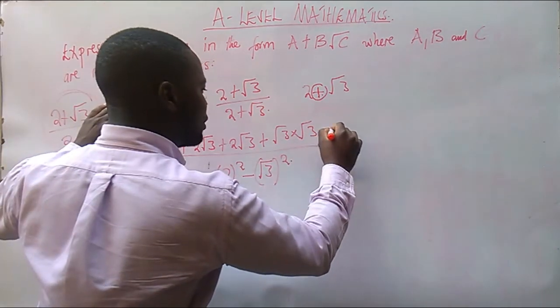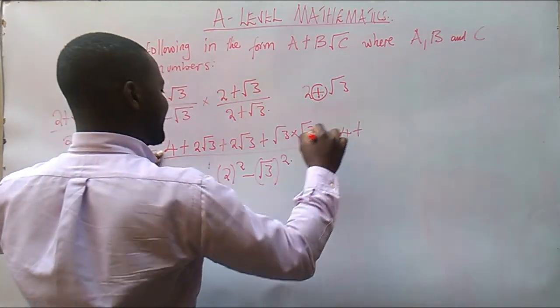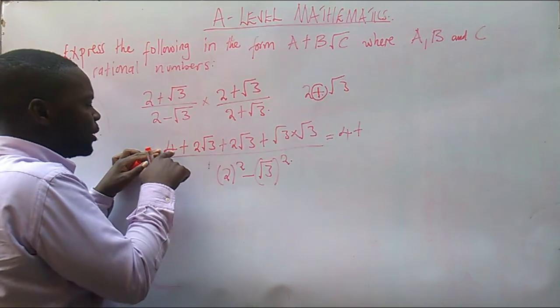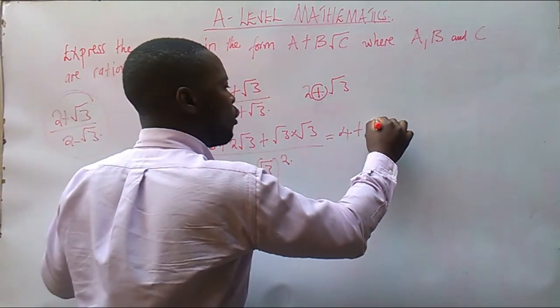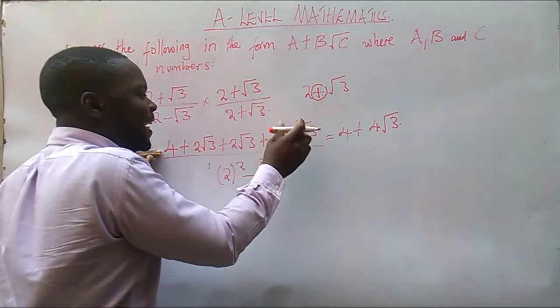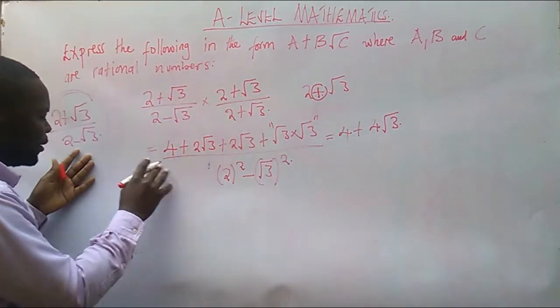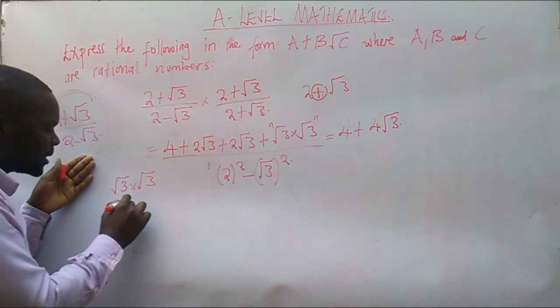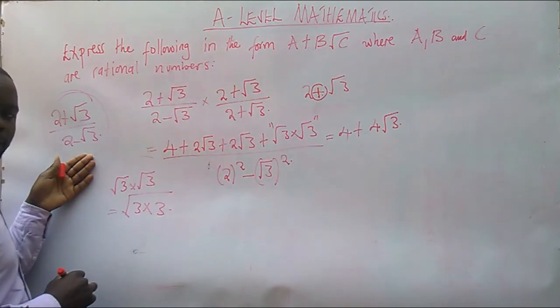So meaning that we are going to have, we have got 4 plus 2 root 3 plus 2 root 3 is the same as 4 root 3. And then here, if they say root 3 times root 3, this expression is the same as everything divided by 3 times 3, like this.